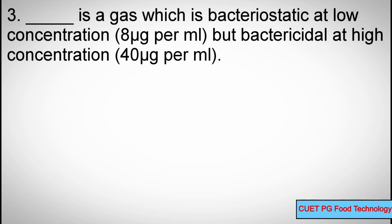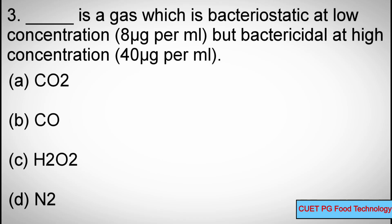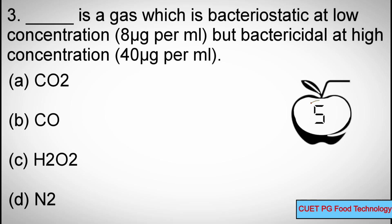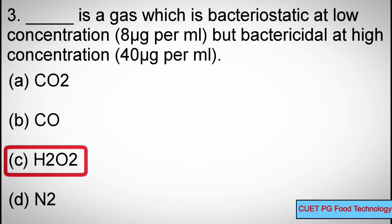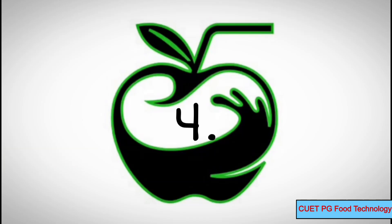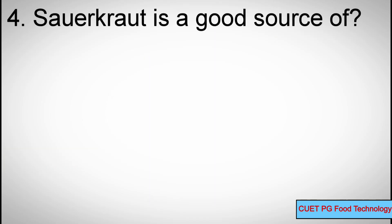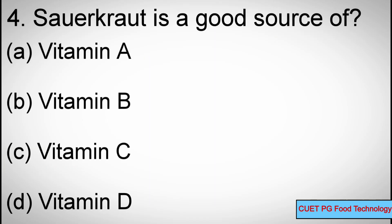Question number three: Dash is a gas which is bacteriostatic at low concentration but bactericidal at high concentration. Options: A) CO2, B) CO, C) H2O2, D) N2. Correct answer: C) H2O2.